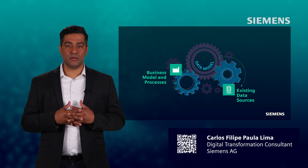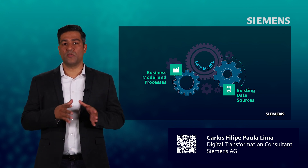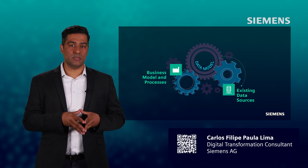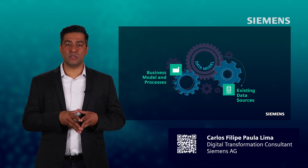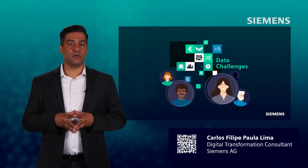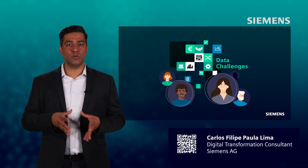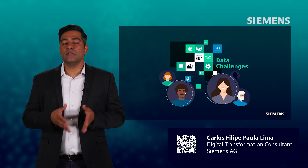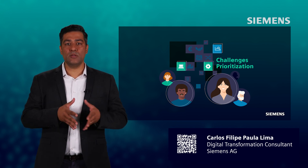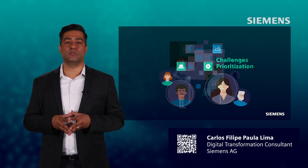Following that, together we focus on creating a data model that provides a contextualized view of your data, showing the links between your business model and process and your existing data. With this data model in our hands, we identify which challenges could be addressed through data handling. Once the data-related challenges are listed, we prioritize hand-in-hand with you the three to five challenges that are affecting your business the most.